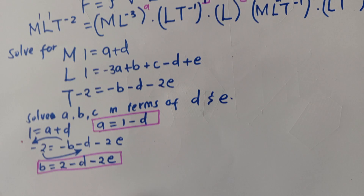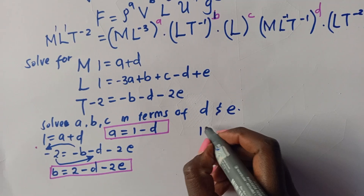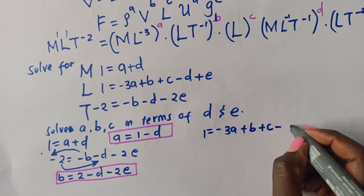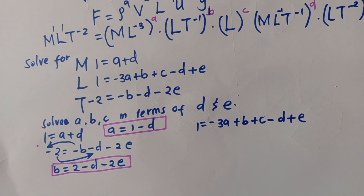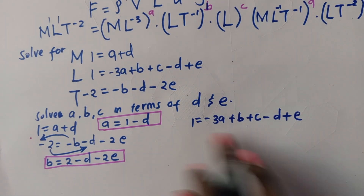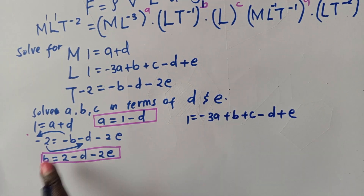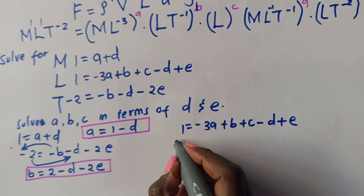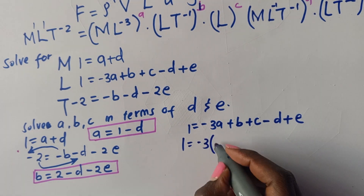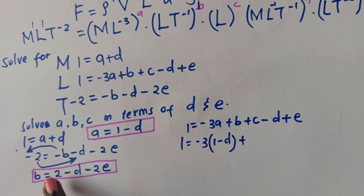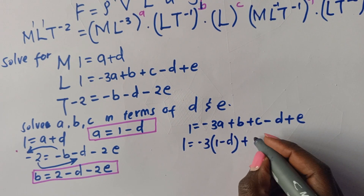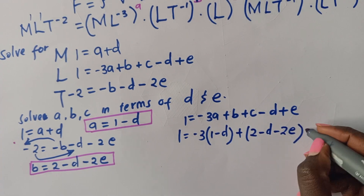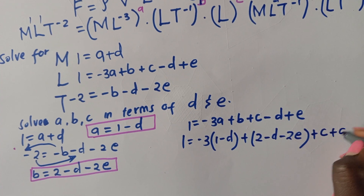Lastly, the value of C is obtained from the L equation: 1 = negative 3A plus B plus C minus D plus E. We substitute A = (1 minus D) and B = (2 minus D minus 2E), giving: 1 = negative 3(1 minus D) plus (2 minus D minus 2E) plus C minus D plus E.